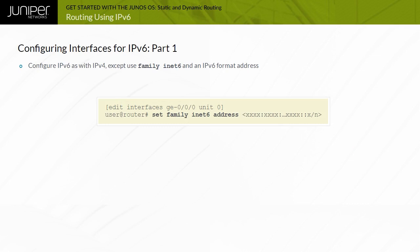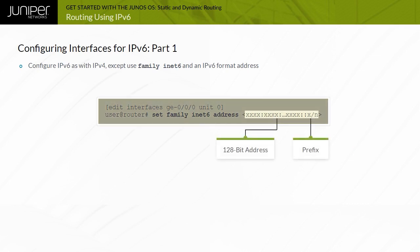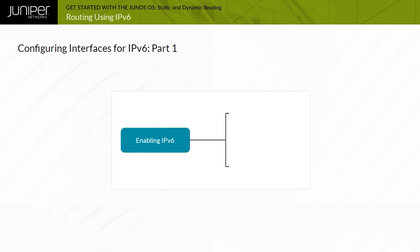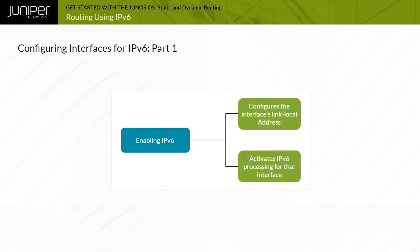IPv6 is already enabled on Juniper routers, so no global command is required. You must, however, configure IPv6 packet processing on an interface by adding Family INet6. Enabling IPv6 on an interface automatically configures the interface's link local address and activates IPv6 processing. Additional addresses can be configured, and the link local address can be manually overridden.